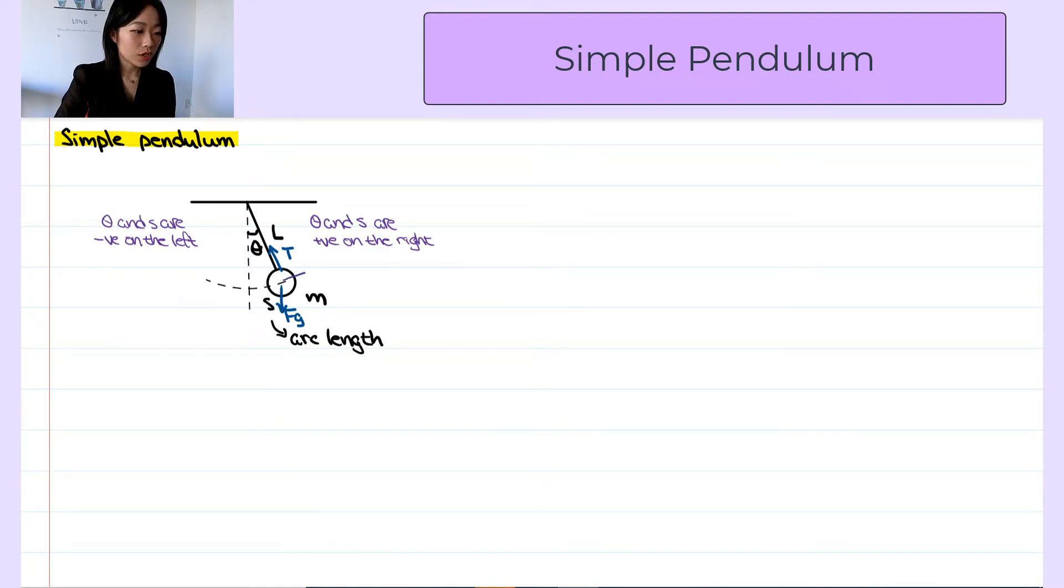There is the tangential direction that is perpendicular to the string and the radial direction that is parallel to the string and pointing toward the center of the circle.